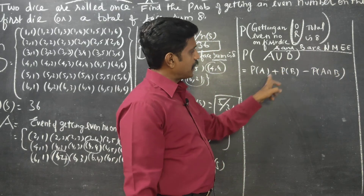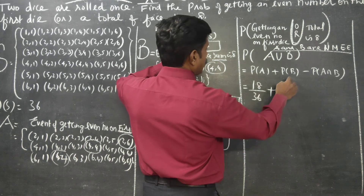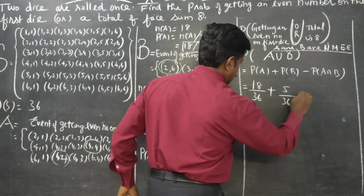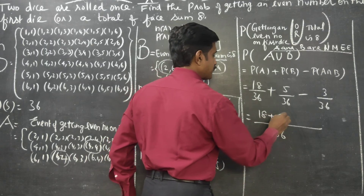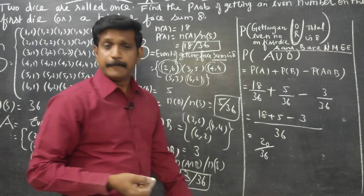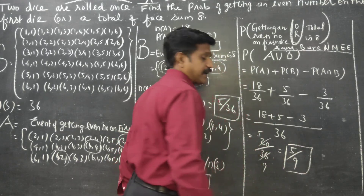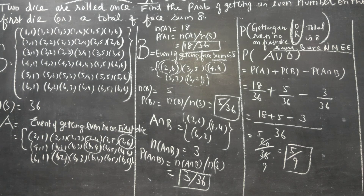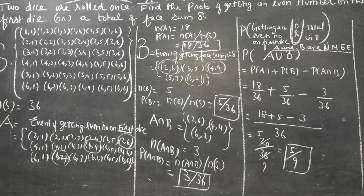Applying the formula: P(A∪B) = P(A) + P(B) − P(A∩B) = 18/36 + 5/36 − 3/36. Taking LCM as 36: 18 + 5 − 3 = 20. So P(A∪B) = 20/36. Cancelling by 4: 4×5=20 and 4×9=36. Therefore the final answer is 5/9.